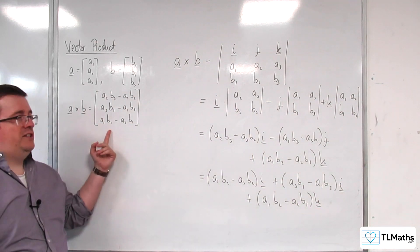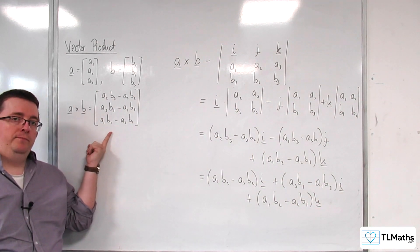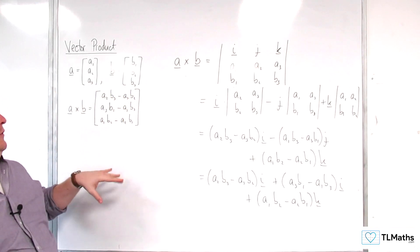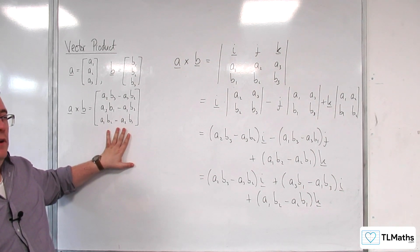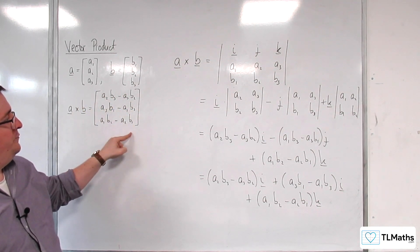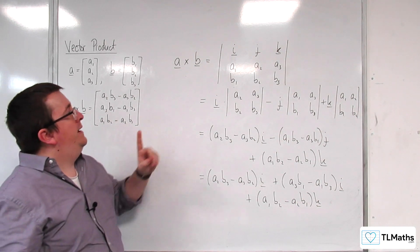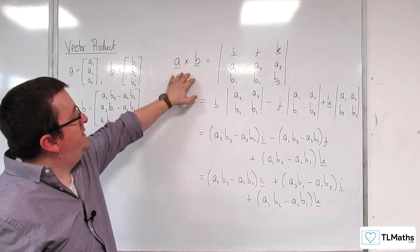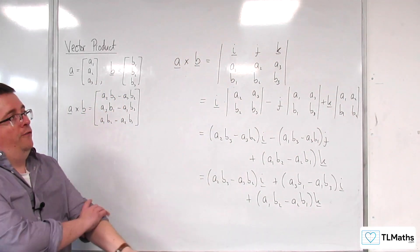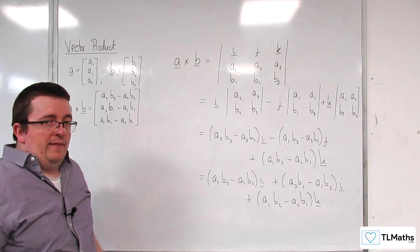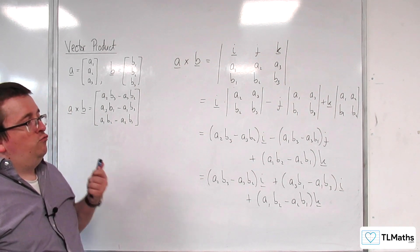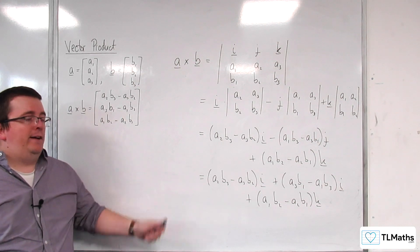Which is precisely the same as what we have here. So, actually, memorizing this, I wouldn't, if I were you. I wouldn't bother memorizing this. I would, instead, just write down the vectors A and B as the middle and bottom row of this 3x3 matrix, and then find the determinant, and that is an easier way to recall how to find the vector product.